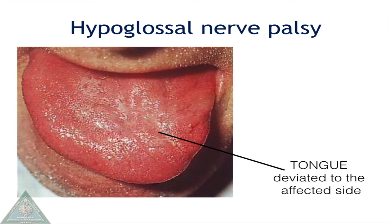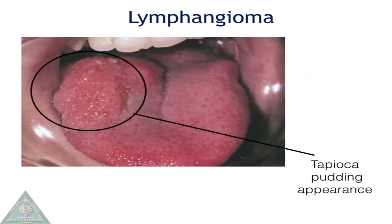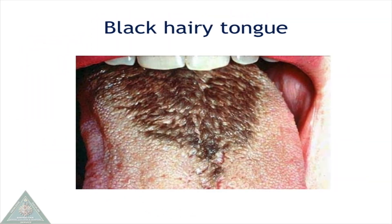Lymphangioma is a hamartoma of the lymphatic vessels and the surface of the lesion has a characteristic appearance known as a tapioca pudding appearance or a frog spawn appearance. Black hairy tongue is caused by the accumulation of keratin in the papillae.